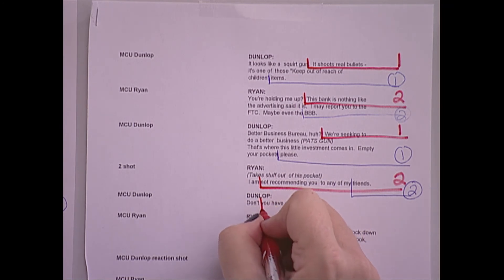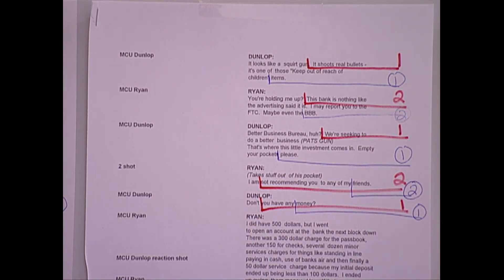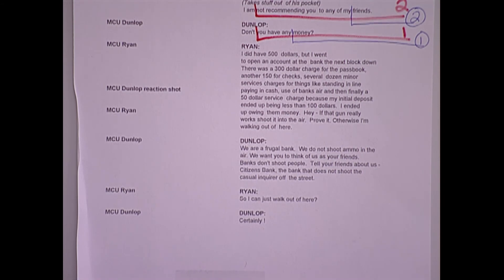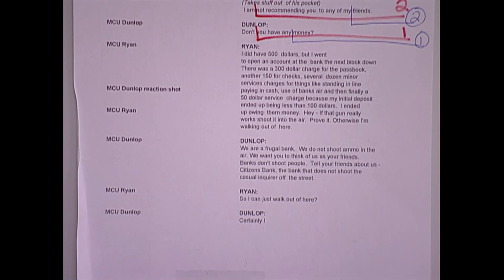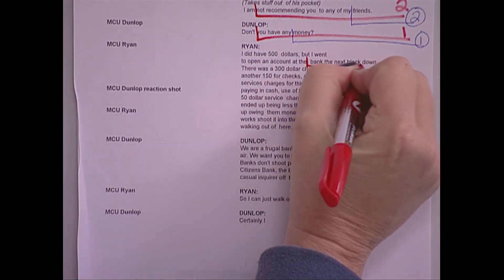Don't you have any money? Ready 1, and between don't and you and any and money, take 1. Coming up on the script, I call this Ryan's soliloquy — he's going to talk for a while. We don't want to sit on him too long because it gets boring. What we can do is show the audience a shot of Dunlop, which lets the audience know what Dunlop is thinking — he could be bored, annoyed, playing with his phone. It gives the audience an insight to what Dunlop is thinking. He says I did have $500 but I went to open an account at the bank the next block down. Between the and bank, ready 2.